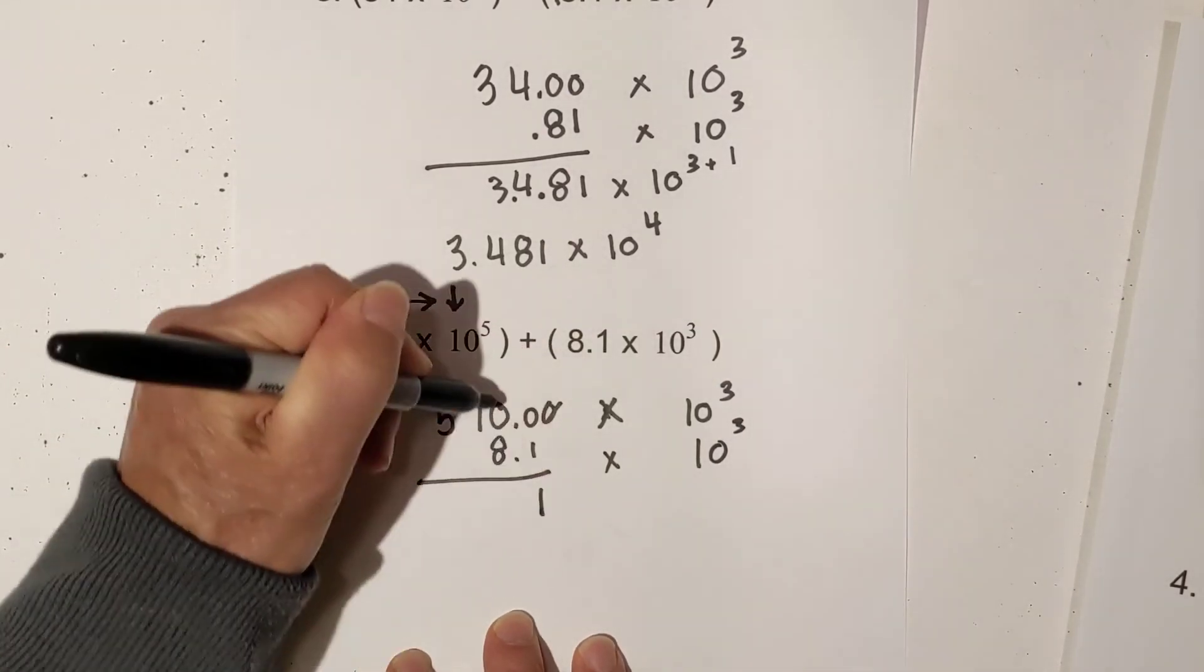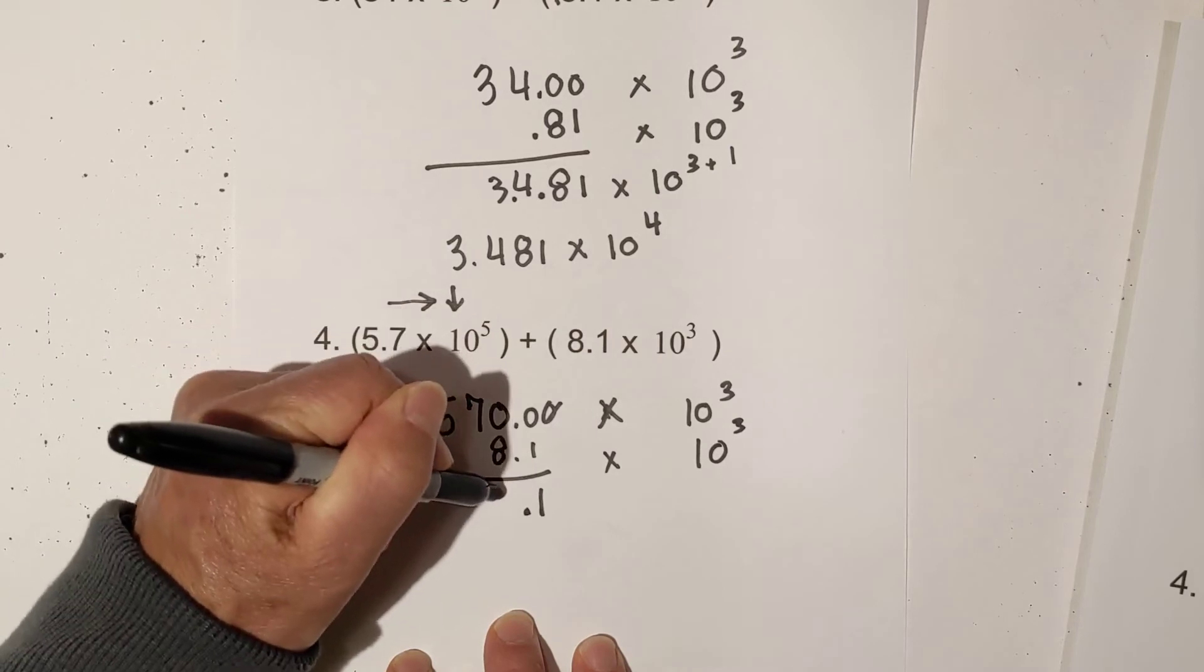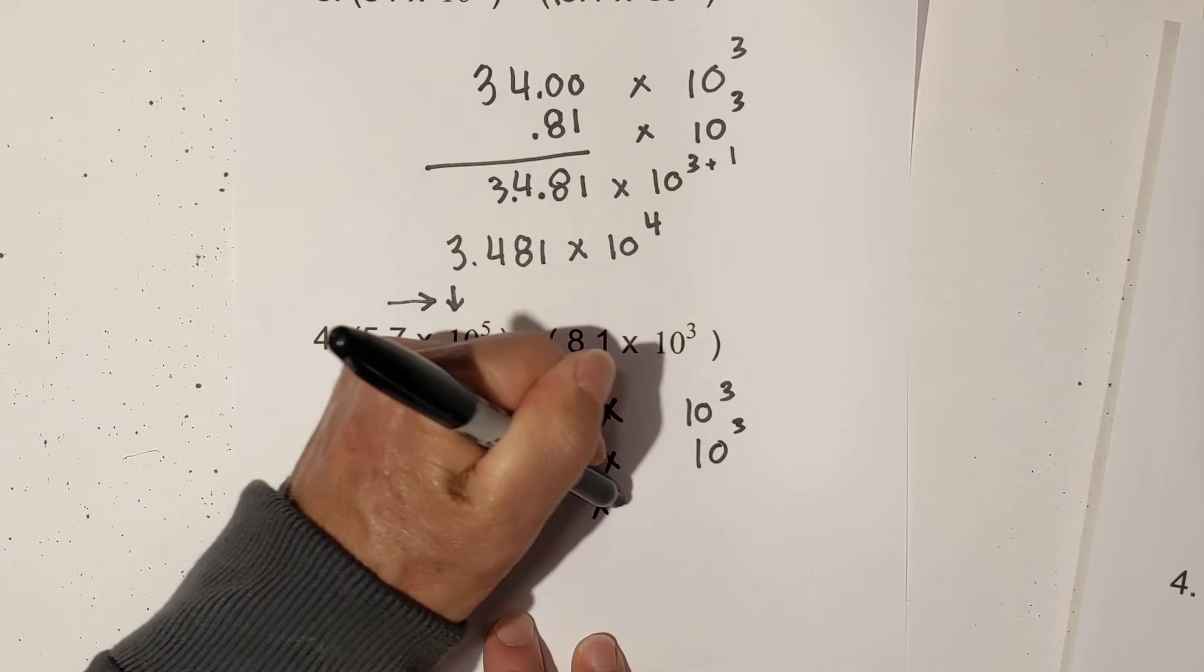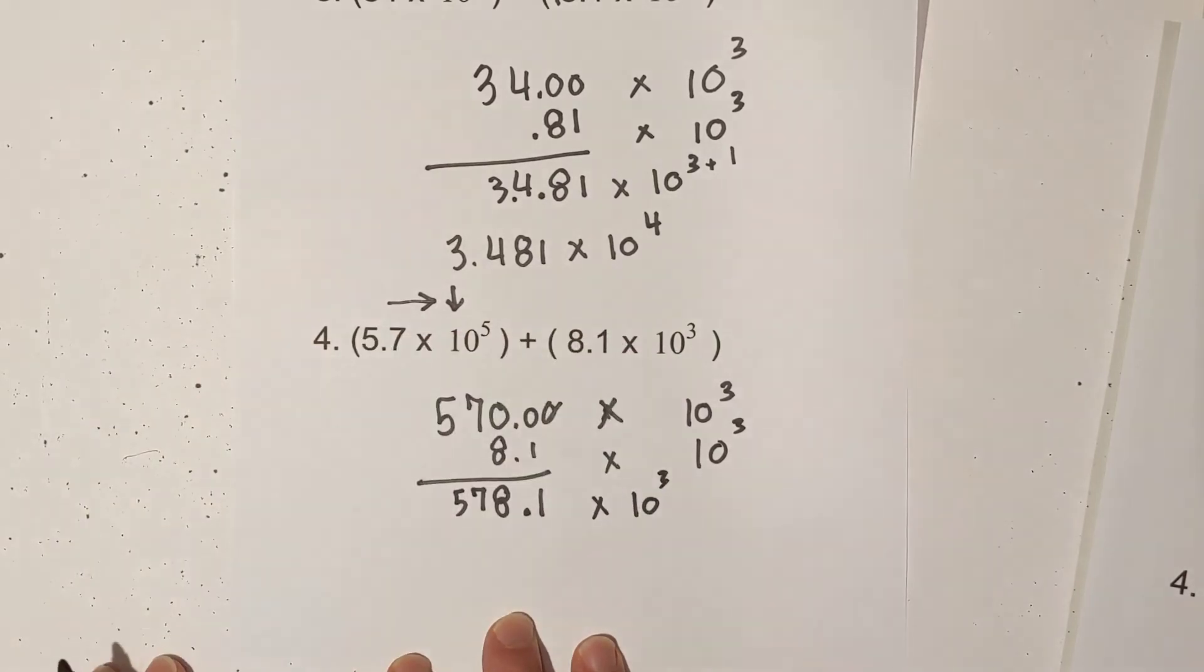When I add this, this is 1. Remember the decimal. This is 8, 7, 5, 78.1 times 10 to the third.